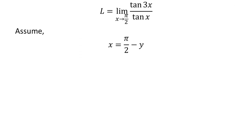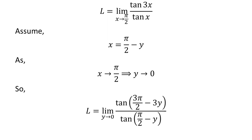Assume x is equal to half of pi minus y. This implies as x approaches half of pi, y approaches 0. Substitution of x in terms of y gives us L is equal to the limit of tangent of 3 times (half of pi minus y) upon tangent of (half of pi minus y) as y approaches 0.